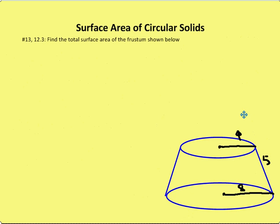In the last problem, I'm asked to find the total surface area of the frustum shown below. Now the trick to this problem is just realizing that this frustum is a portion of an overall larger cone.